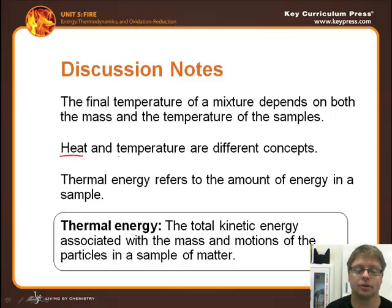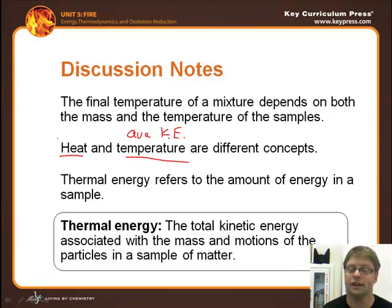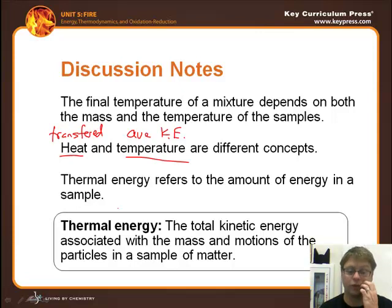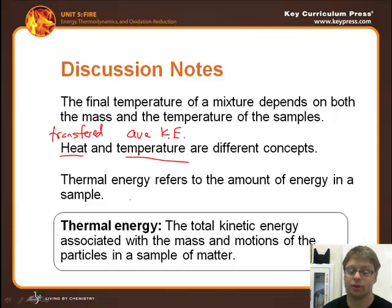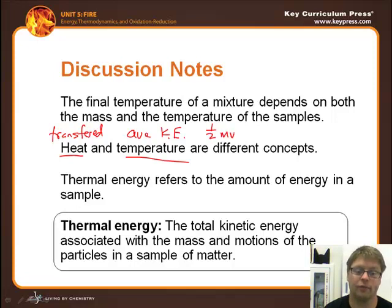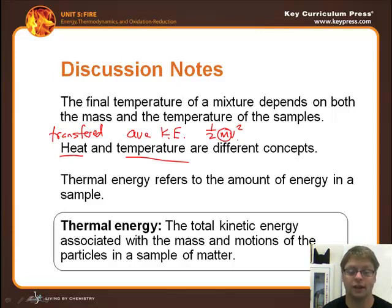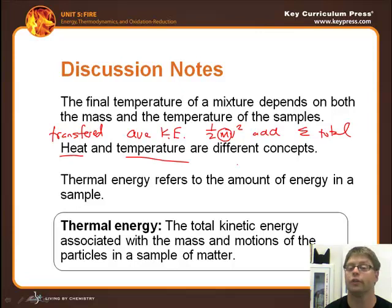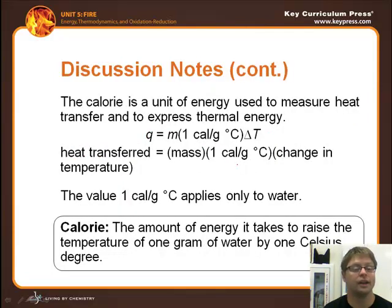Heat and temperature are different concepts. Temperature is the average kinetic energy of all the molecules. Heat is the measure of energy transfer. Thermal energy refers to the total kinetic energy associated with the mass and motions of particles in a sample — so it accounts for both mass and average kinetic energy. More mass means more total kinetic energy, which equals the thermal energy.